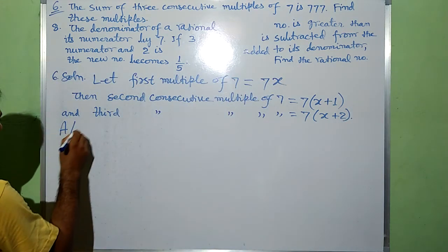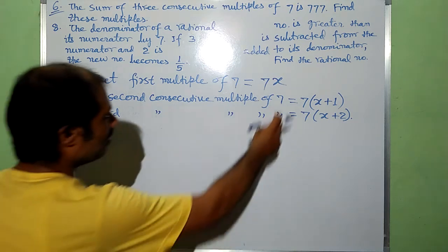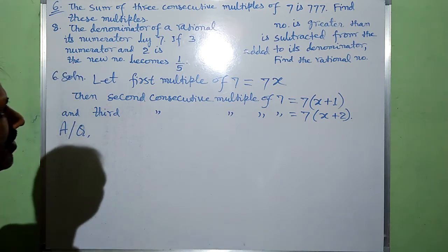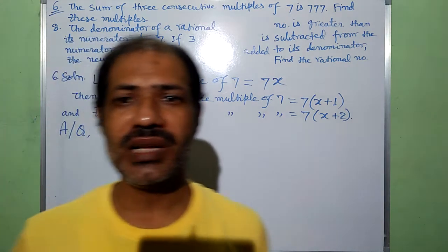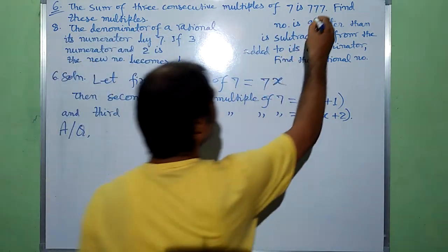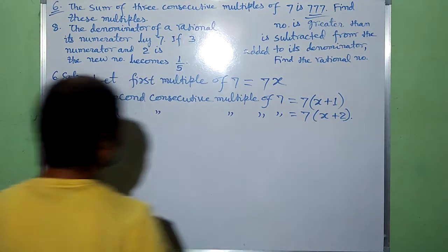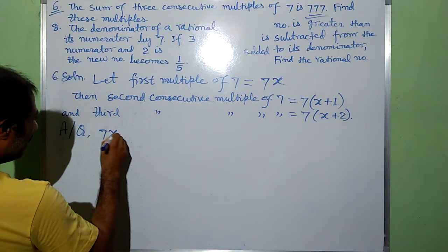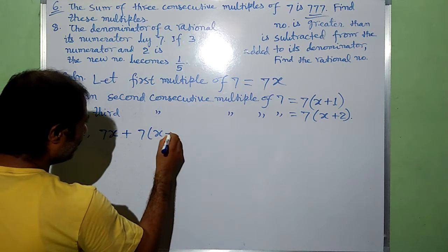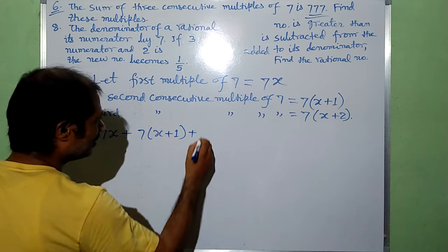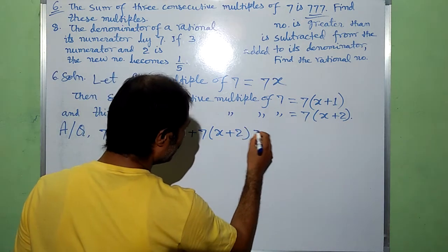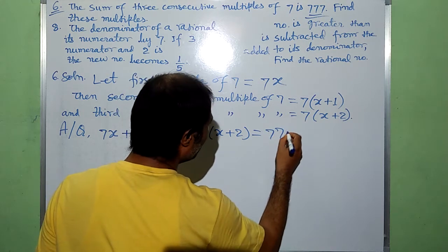According to the given question, the sum of these three consecutive multiples of seven is given, that is seven hundred seventy-seven. So: seven x plus seven into x plus one plus seven into x plus two is equal to seven hundred and seventy-seven.